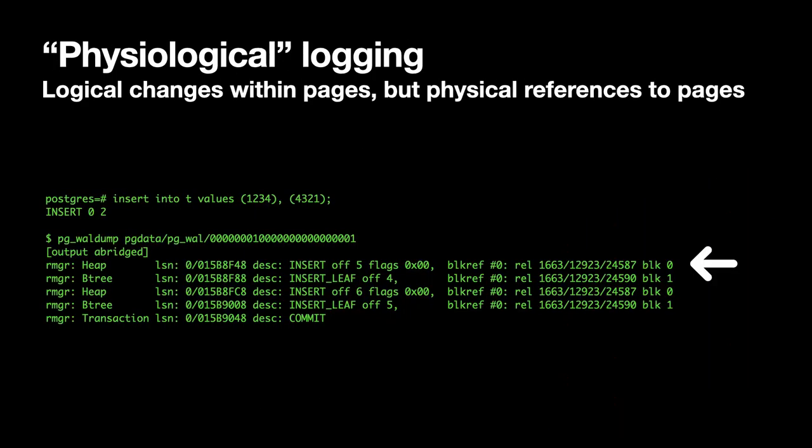Let's take a look at the contents of the WAL. If you run an insert statement to insert two rows into a table with an index, that simple statement generates five WAL records — you can see that with pg_waldump. It produces much more output than this, but I've taken just the interesting bits. The only thing we really want from this is the physical block references. Everything else in the WAL, with some minor exceptions, is not relevant for pre-fetching purposes.